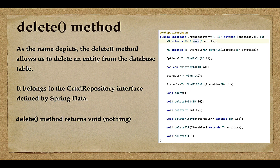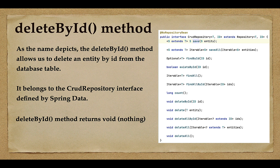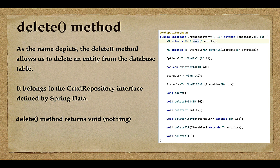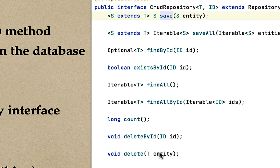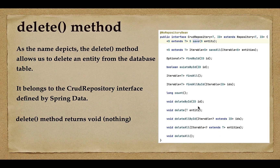Welcome back. In the previous lecture we saw how to delete an entity by ID from the database table using the deleteById method. In this lecture we'll see how to use the delete method to delete an entity from the database table. Notice that the delete method does not take an ID — it takes a whole entity object. It is from the CrudRepository interface, returns void, and takes an entity object as its argument.